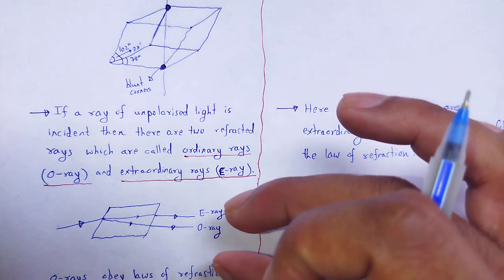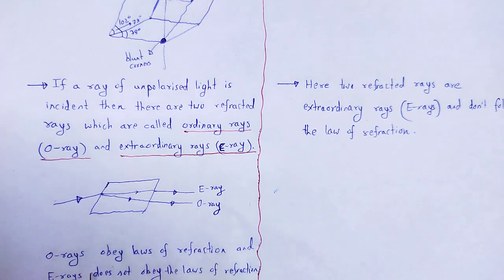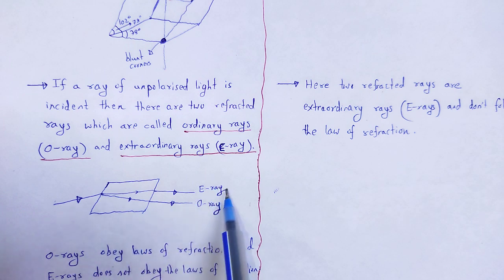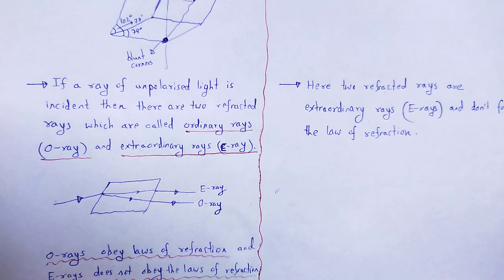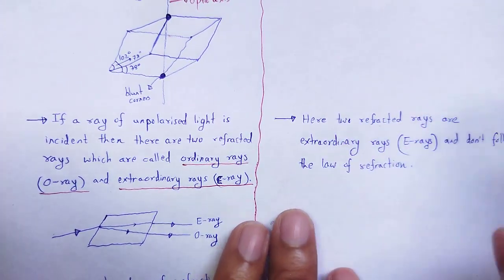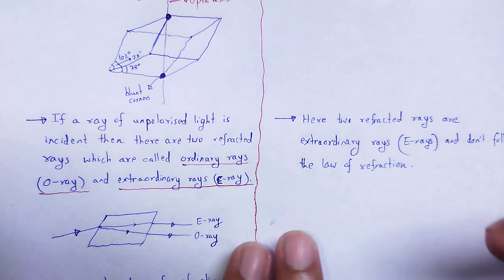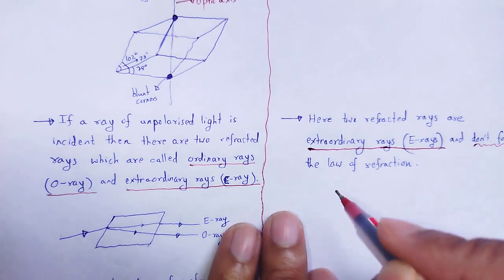Why are these rays named ordinary and extraordinary? It is based on how these rays obey the laws of refraction. O rays obey the laws of refraction. The rays which obey the law of refraction we call O rays, and E rays do not obey the laws of refraction. In the case of biaxial crystals, there are also two refracted rays, but both of these refracted rays are extraordinary rays.